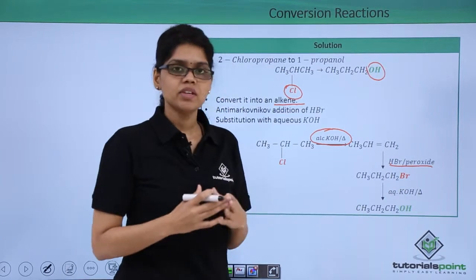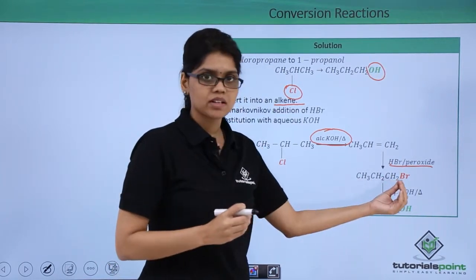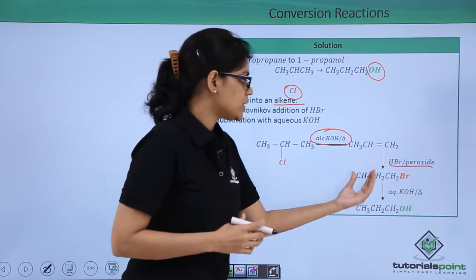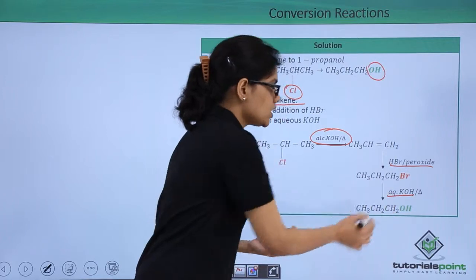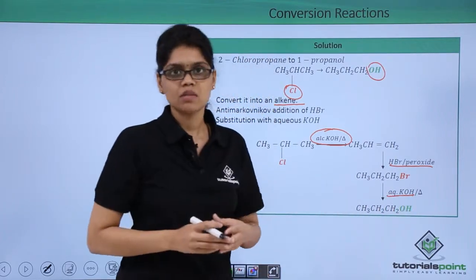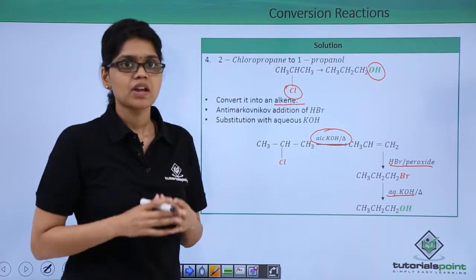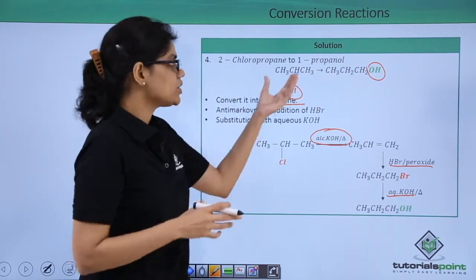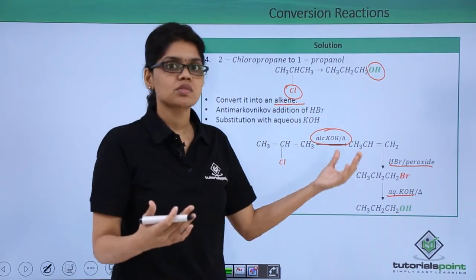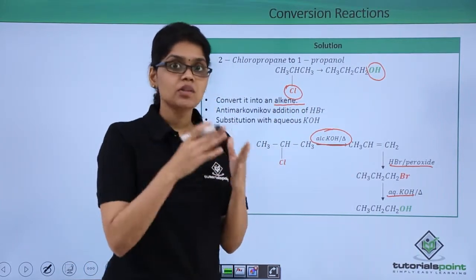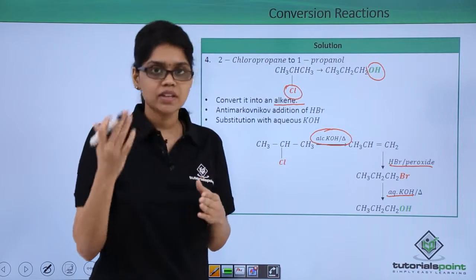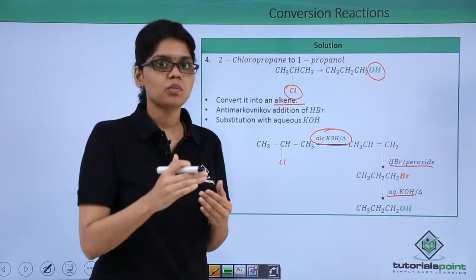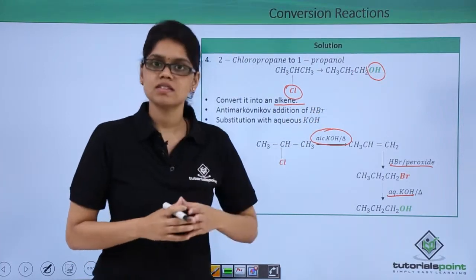Now simply what we need to do is introduce OH to C1 carbon atom by using aqueous KOH for substitution. When this alkyl halide reacts with aqueous KOH you get OH at C1 carbon atom. I hope you are clear on how we have attained this conversion - first we convert it to an alkene followed by anti-Markovnikov addition of HBr where you have alkyl bromide. And since bromine is a very good leaving group you can simply substitute it with aqueous KOH where OH substitutes bromine at C1 carbon atom.